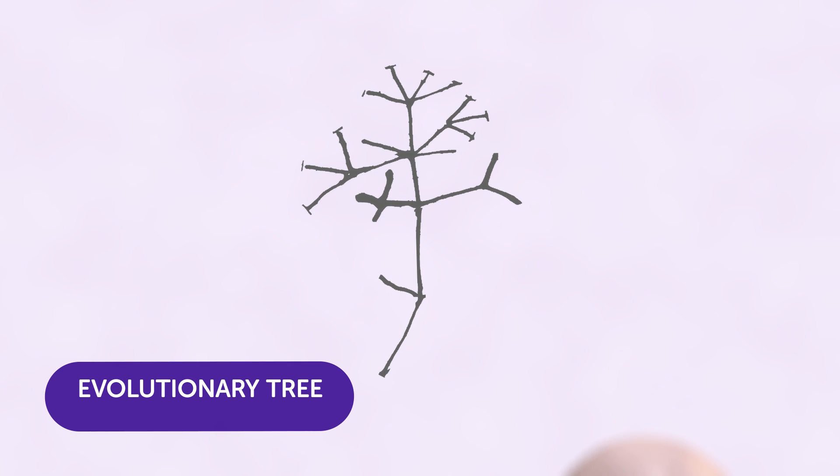More than 150 years ago, Charles Darwin first drew evolution like a tree, predicting that different species branch off from their ancestors.